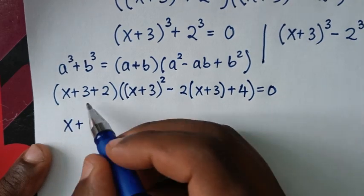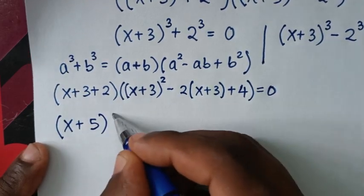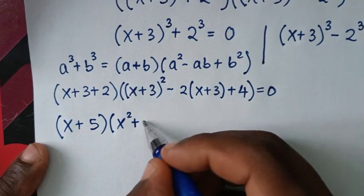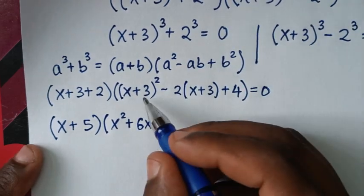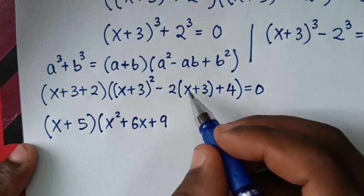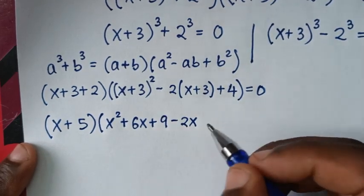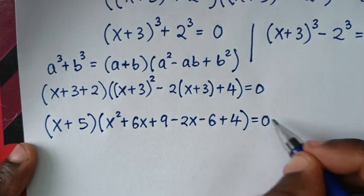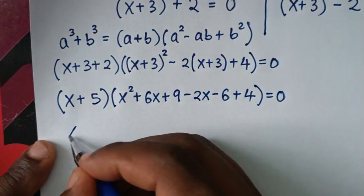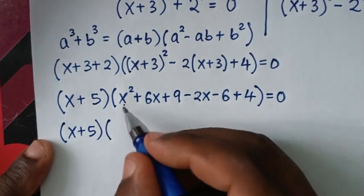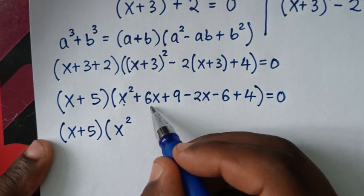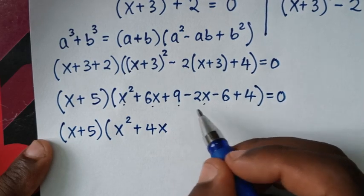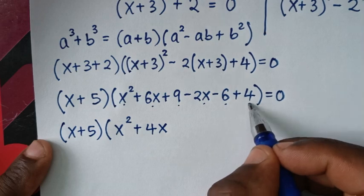So x + 3 + 2 is 5. Expanding (x + 3)²: it is x² + 6x + 9. Then minus 2(x + 3) gives minus 2x minus 6. Then plus 4, equals 0. Simplifying inside: x² plus 6x minus 2x is 4x, and 9 minus 6 plus 4 is 7. So it becomes (x + 5)(x² + 4x + 7) = 0.